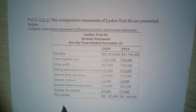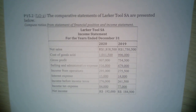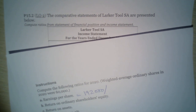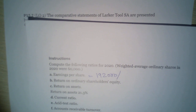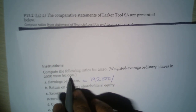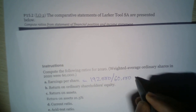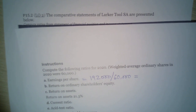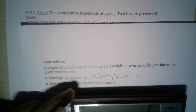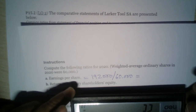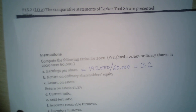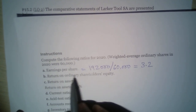So we start with net income for 2020, which is 192,000, divided by the weighted average ordinary shares of 60,000. Doing the calculation: 192,000 divided by 60,000 gives us 3.2. So earnings per share is $3.20 per share.